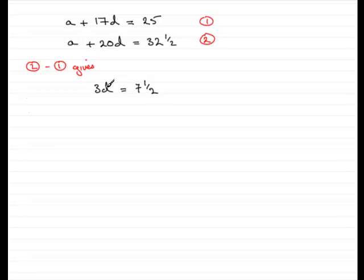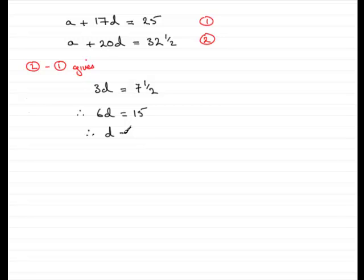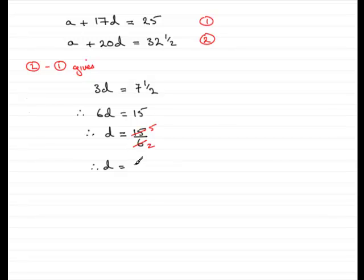I don't like the 7.5, so what I'm going to do is double both sides — times both sides by 2. So therefore, I get 6D equals double 7.5, and we've got 15. And so therefore, divide both sides by 6, and you get D equals 15 over 6. This will reduce down — we can divide top and bottom by 3. So 3s into 6 goes 2, 3s into 15 goes 5. So we've got 5 over 2 for D, or 2.5.